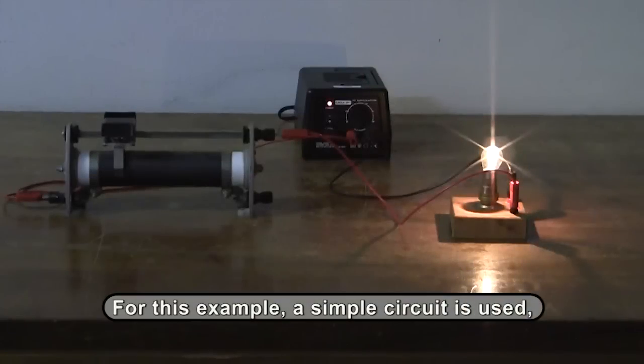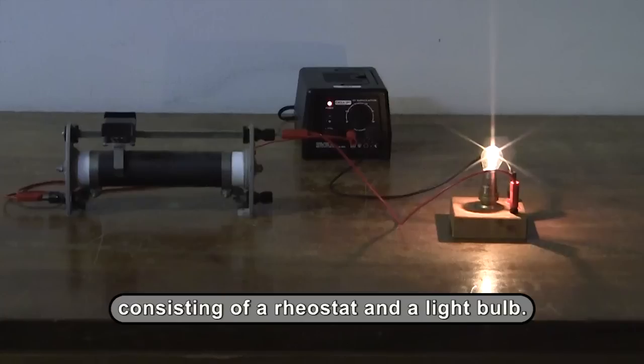For this example, we will be looking at measuring the voltage across a resistor using an analog voltmeter instead of a digital multimeter.